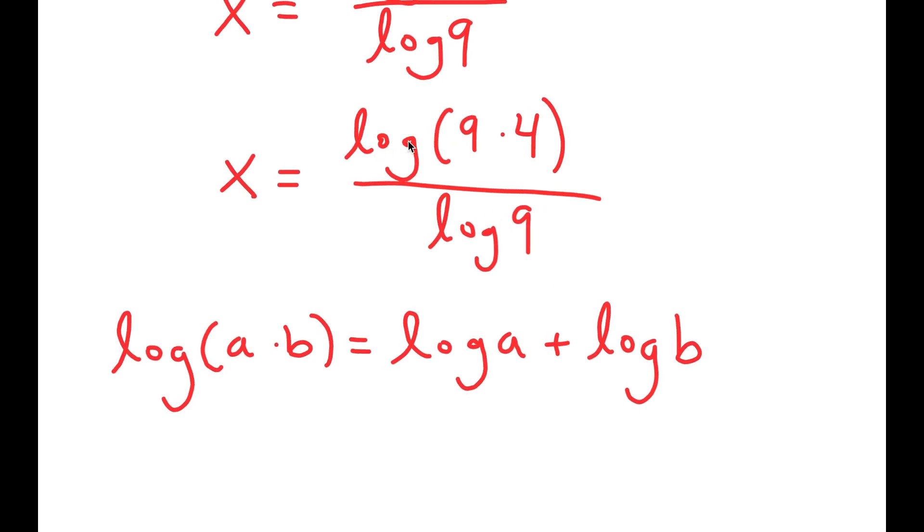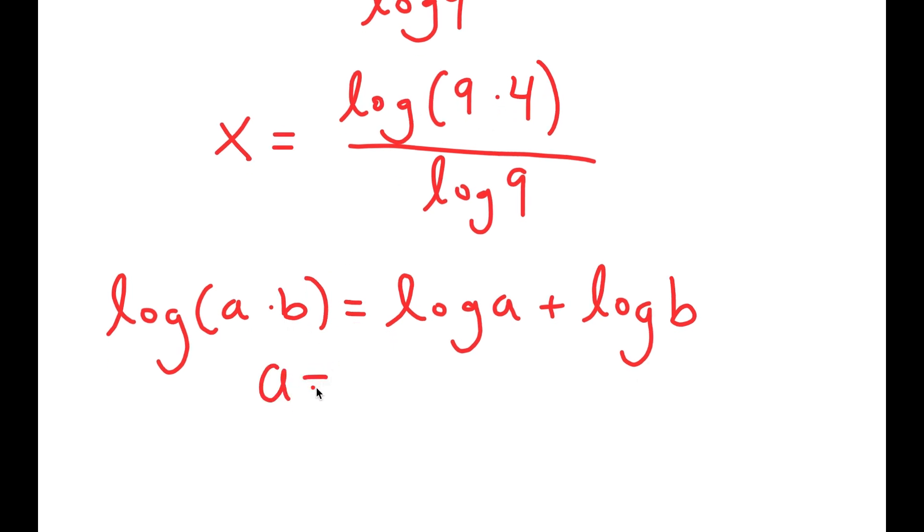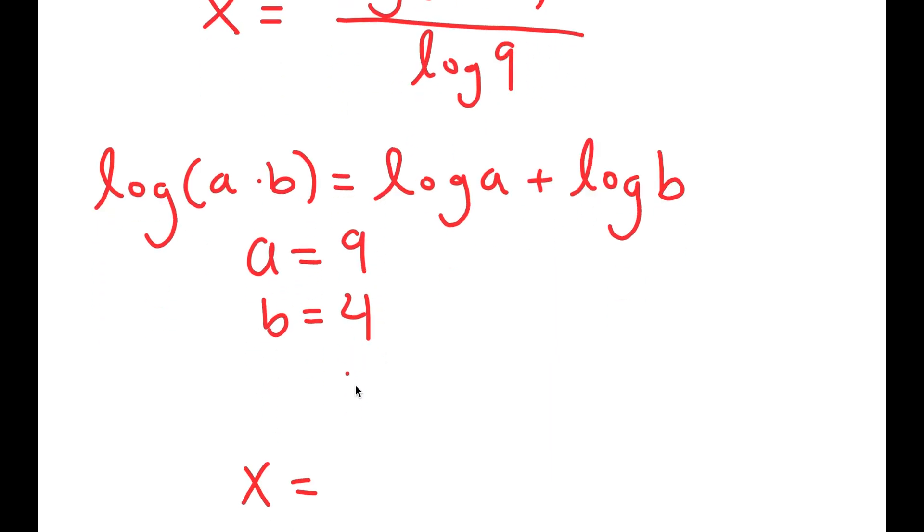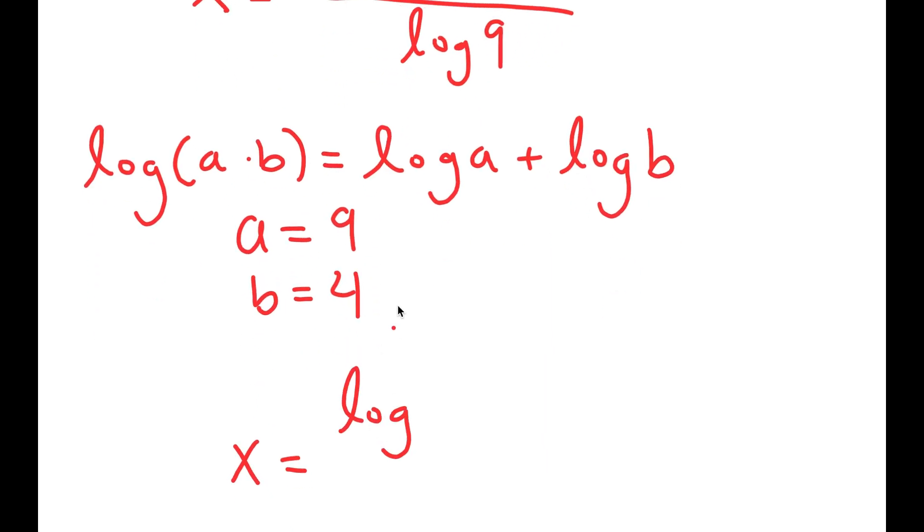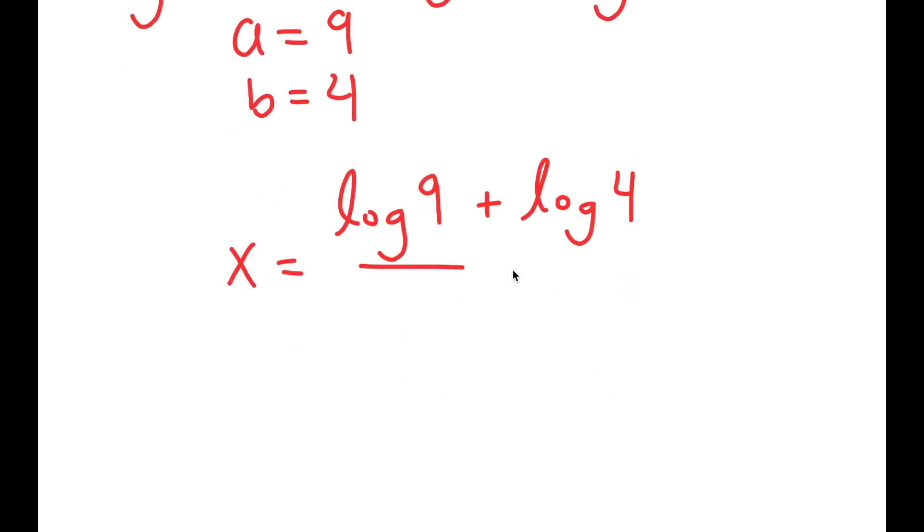So in this case, I have log 9 times 4, and we can say that a is 9 and b is 4. So this turns into log of a, which is 9, plus log of b, which is 4. And remember, I still have all of this over log 9.